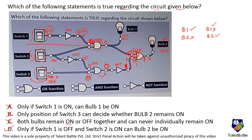The answer is option D: only if switch 1 is off and switch 2 is on can bulb 2 be on. If switch 1 is off, the NOT gate makes it 1, AND gate gets both inputs as 1 if switch 2 is on, so bulb 1 comes on and bulb 2 also remains on.